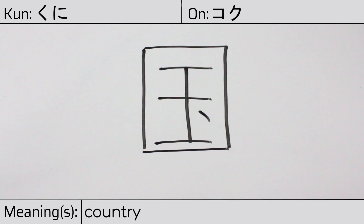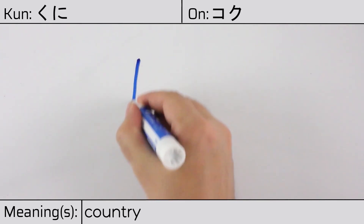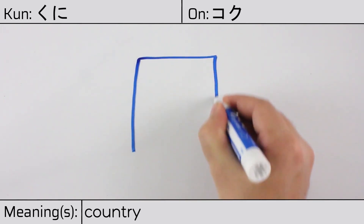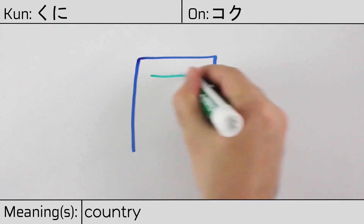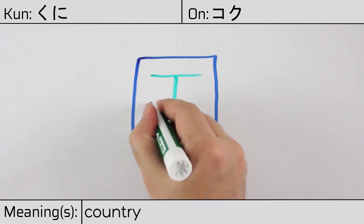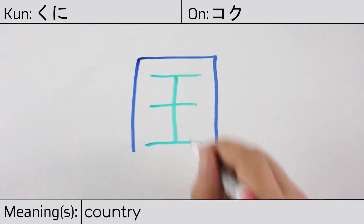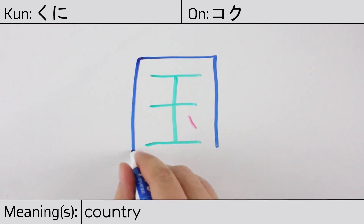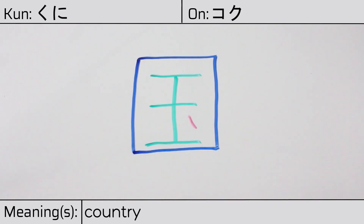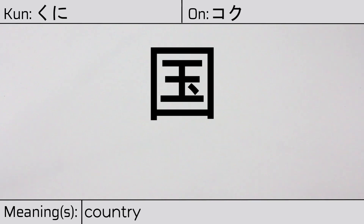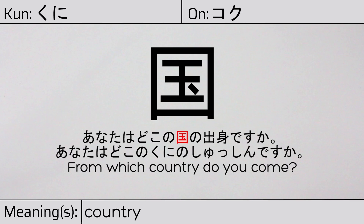This character is made up of the following radicals or parts: the enclosure or territorial boundaries radical, followed by the king with his jewel in the center. You can remember this kanji by the following hint: king with his jewel within the borders of his country. Our example sentence is: Anata wa doko no kuni no shushin desu ka? — From which country do you come?